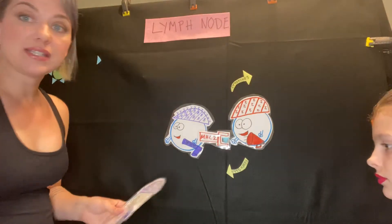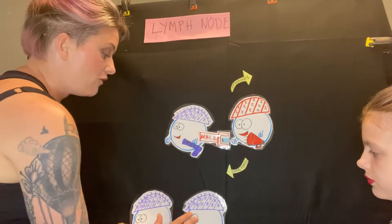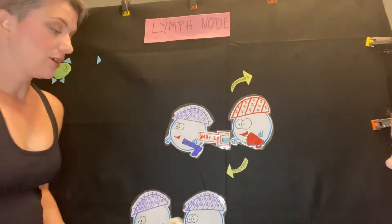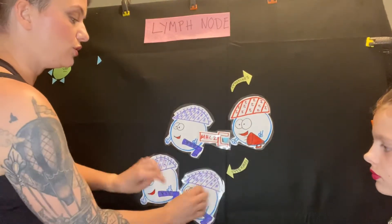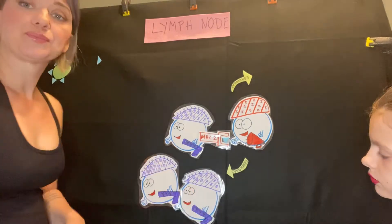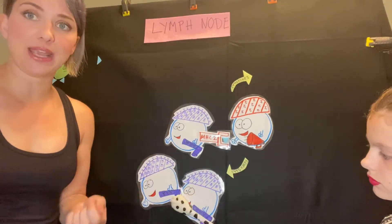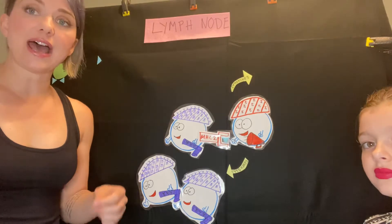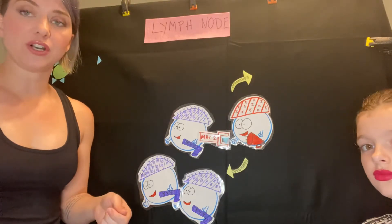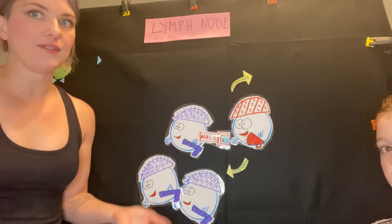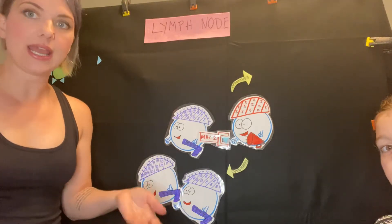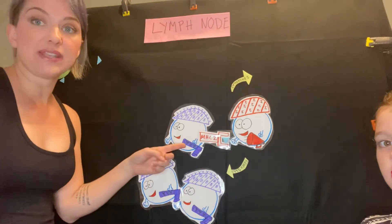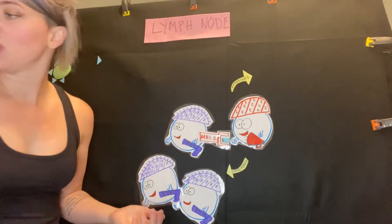The B cell will then make a bunch of memory cells. These cells are genetically identical to the B cell and they have the same antibody on their surface. So the next time that antigen comes into our body — because chances are we'll see it again if it's in our environment — we'll have not just one B cell that'll recognize it, but a bunch.